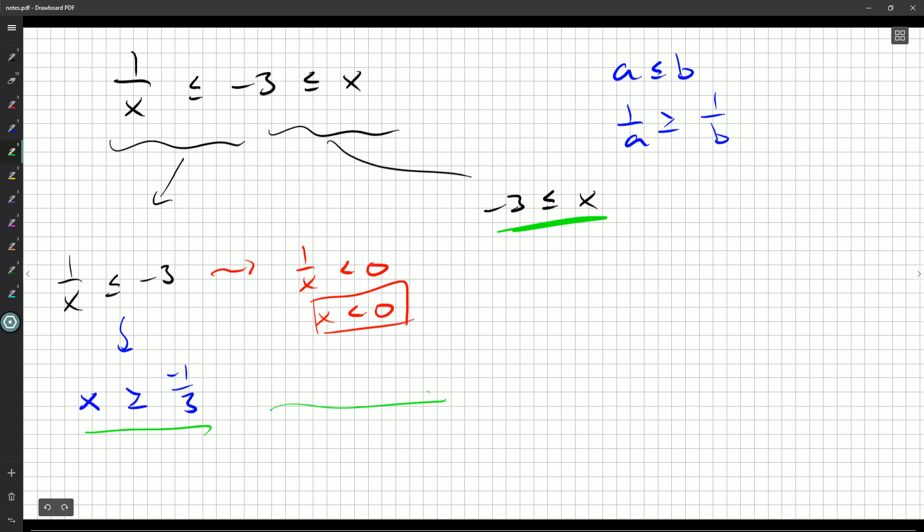So it looks like the only things we know is x has to be negative, and x has to be greater than or equal to negative 1 third. But combining these, we get negative 1 third is less than or equal to x is less than zero.